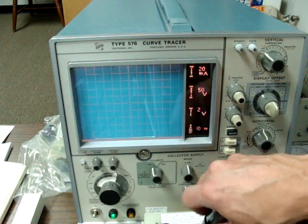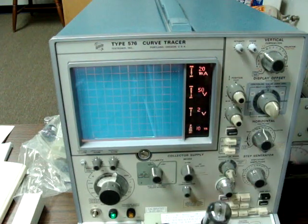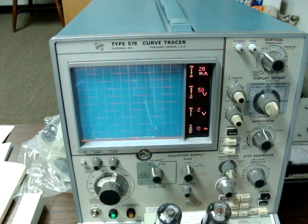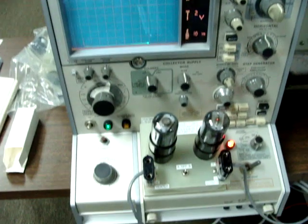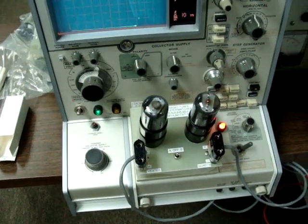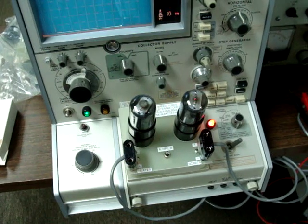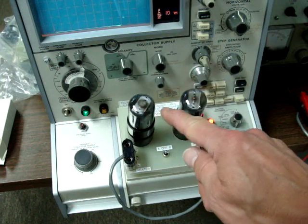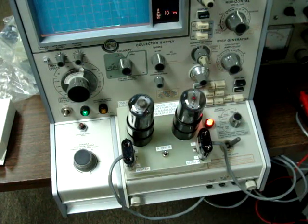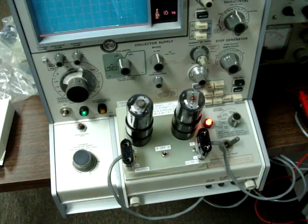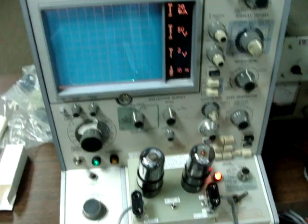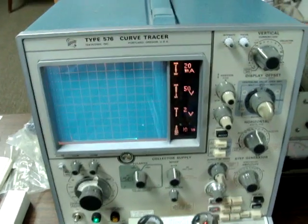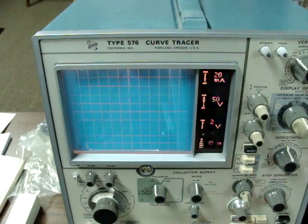Then we'll plug the two tubes into the socket. The nice thing about the Tektronix 576 is it was designed with a pad for solid state devices. It was designed for transistors and FETs. With a little ingenuity, a pad can be modified to take two tubes, a heater supply and a screen supply. You can actually plot the curves of tubes on a device that was originally designed for solid state devices. So now we'll pull up a little bit closer. We're just about ready.